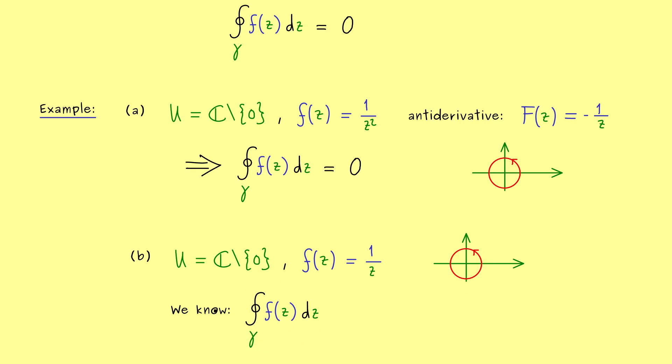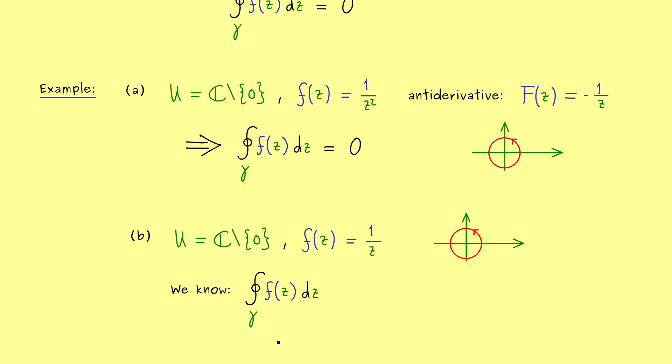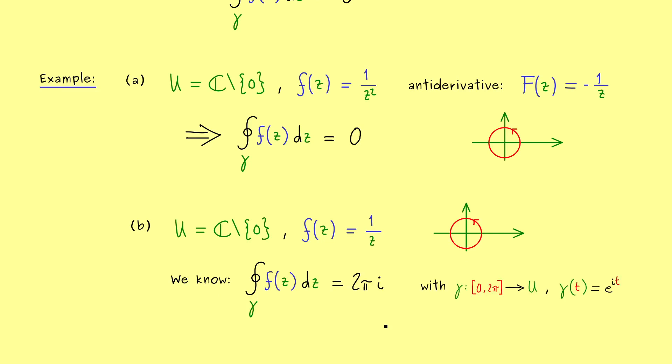More precisely the result we got was that this integral is equal to 2πi. And one possibility to get this curve here was to choose gamma defined on the interval 0 to 2π and set to e to the power it.